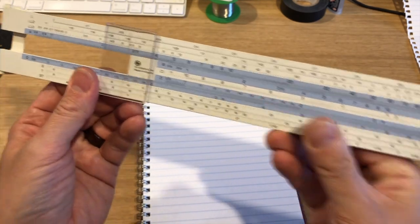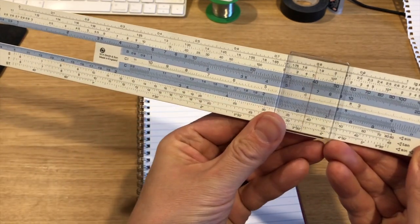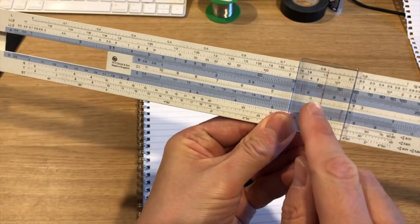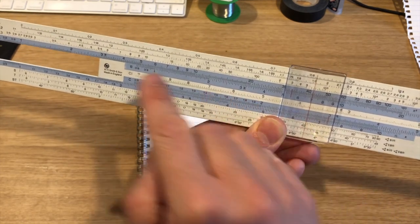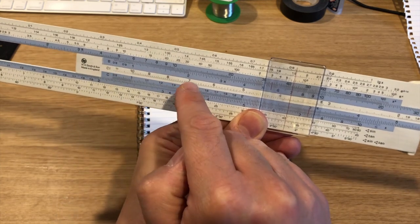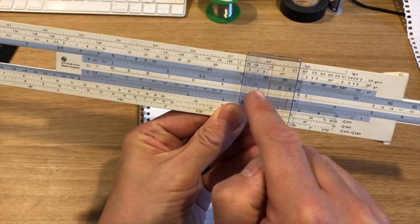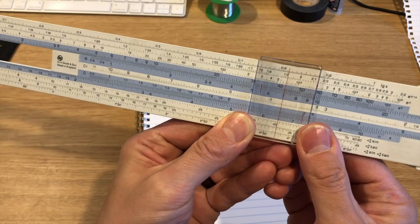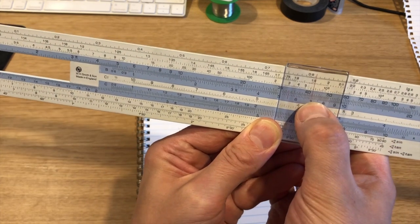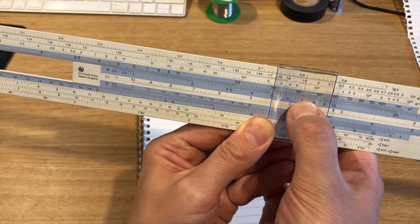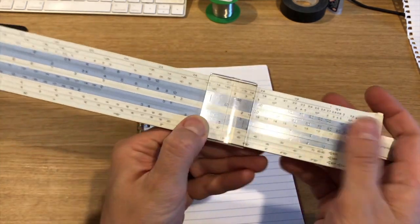And then I can move this slider across to read it off on this scale. So 1 times 6 is 6. 2 times 6 is 12. And of course, if you go to seven sixes, you'll get the ultimate answer. 42. And that's basically how a slide rule works.